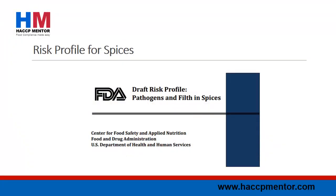The US FDA has recently released a risk profile on pathogens and filth in spices. If you use spices in any of your food products, this is a great resource to check out. The information provided will assist you in undertaking your own raw material hazard analysis, with the majority of GFSI standards requiring you to do this. I have put together an infographic on some of the key information, which you can view on the transcript to this episode or find on my HACCP Mentor Pinterest page.